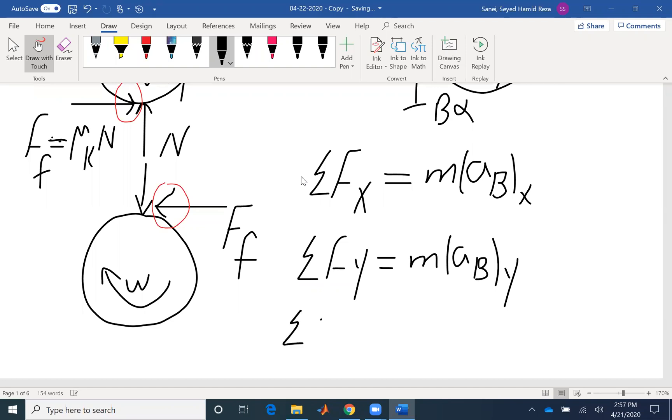And also, summation of moment. We have multiple options, but here, writing about the center, which is both center of gravity and a fixed point, and I assume counterclockwise to be positive. I know the center of gravity does not have any acceleration, so my force equation actually looks like a static problem. Summation of forces equal zero.